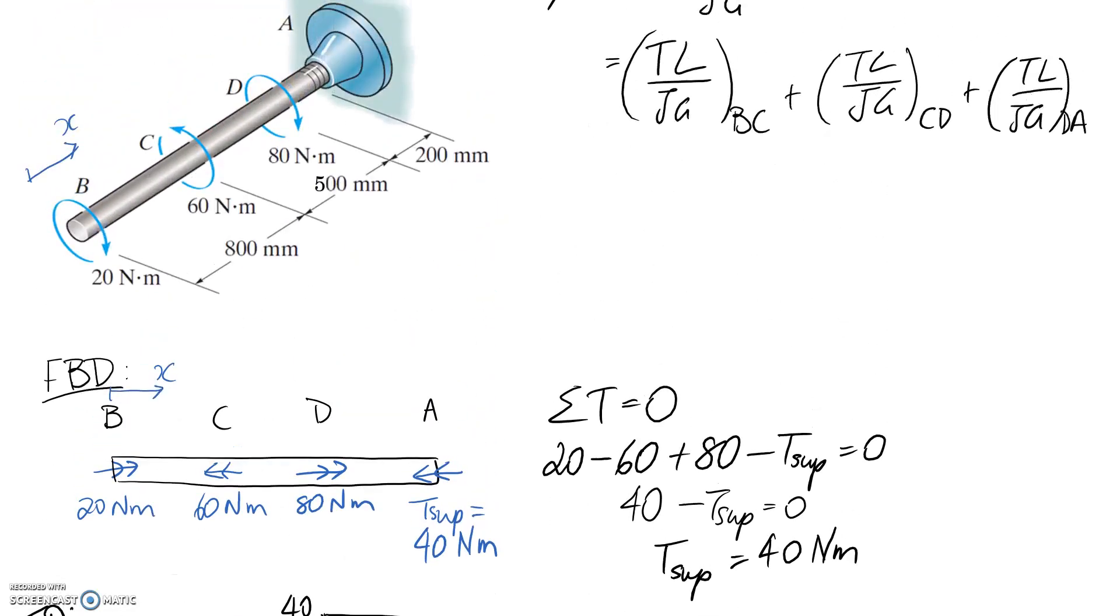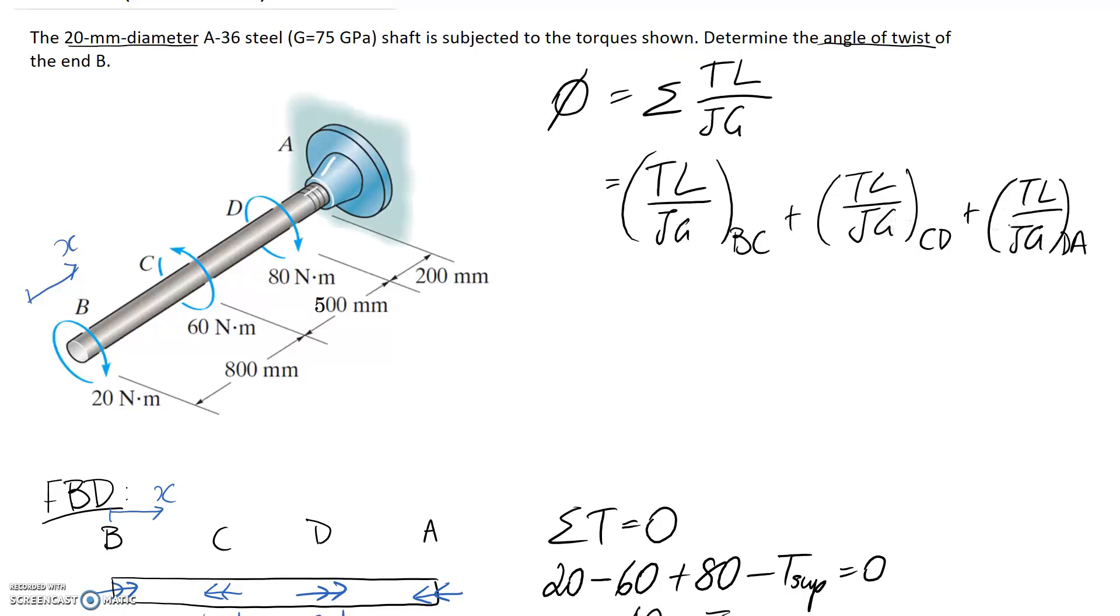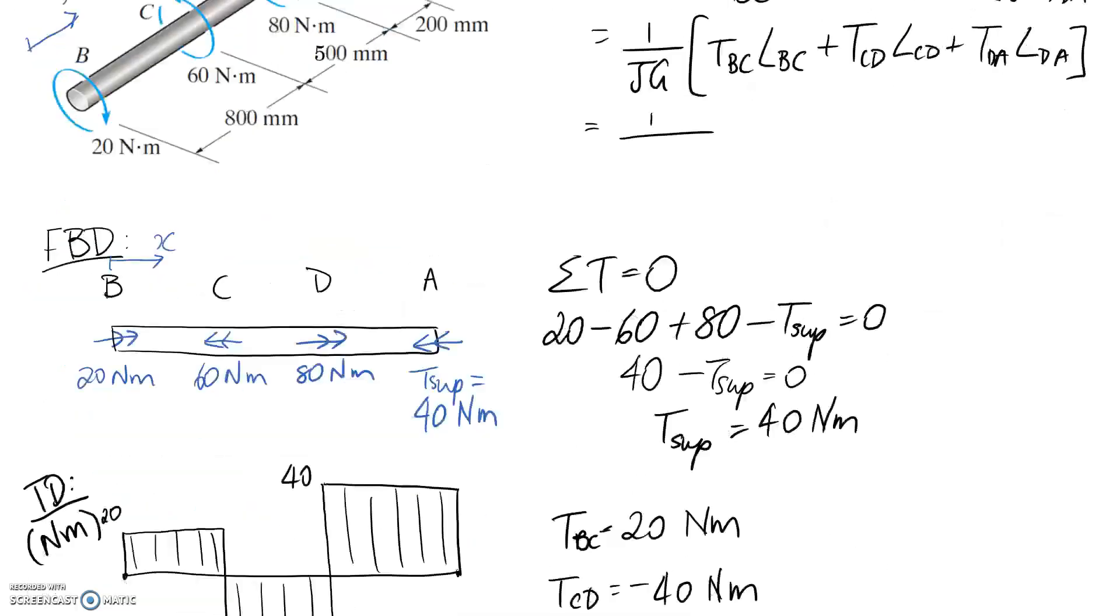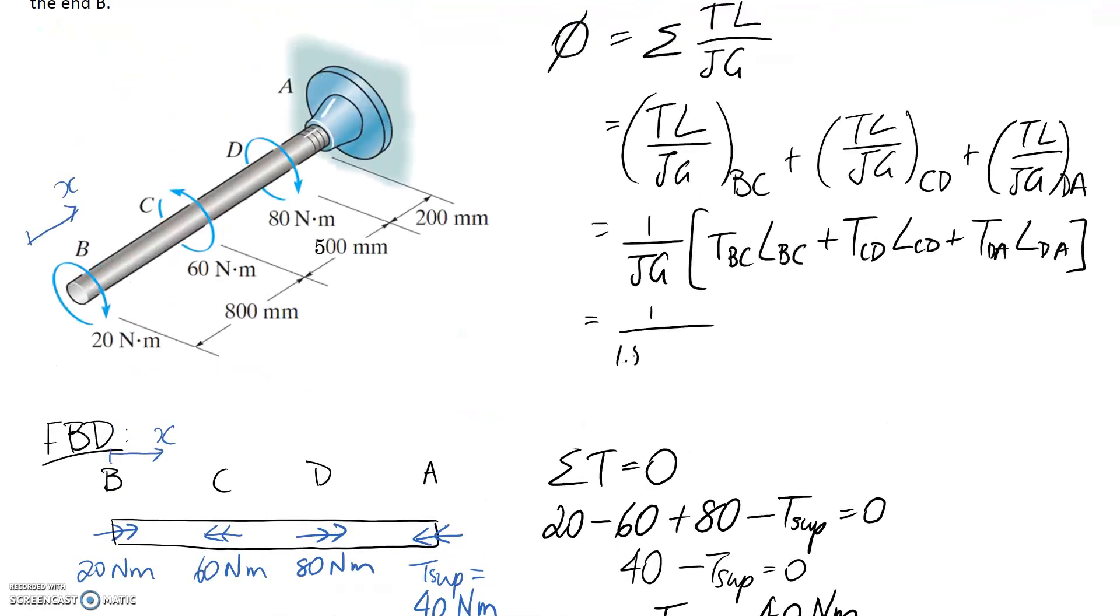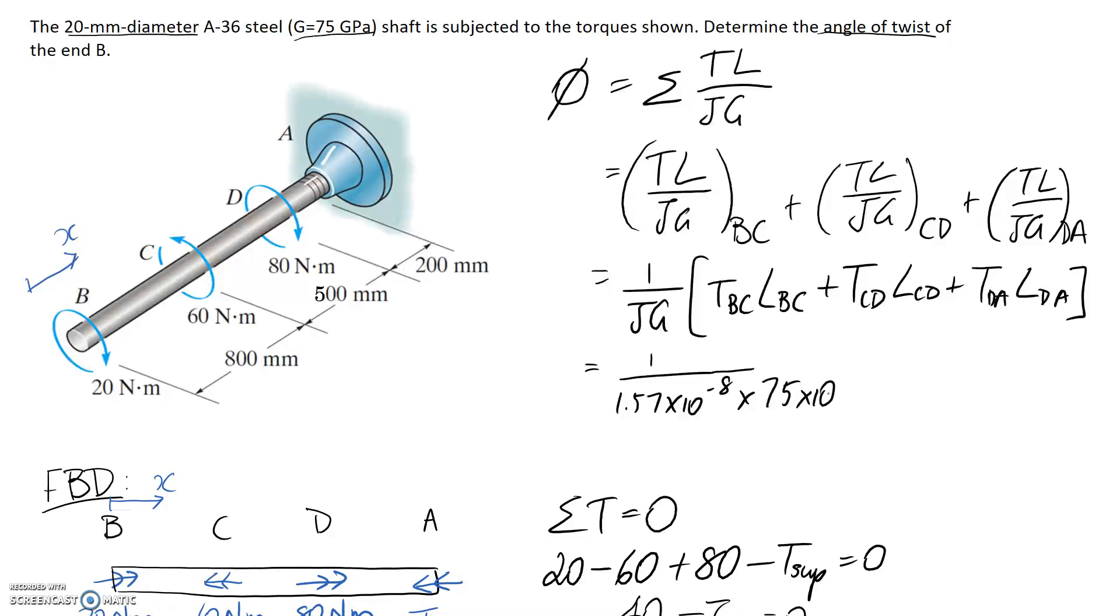The only other thing we've got in this equation is G. G is a material property based on what our shaft is made from. We have A36 steel, and we were given in the question that the shear modulus for the material is 75. Since the shaft is all made from the same material, this is consistent for each section. What I might do is bring this JG out the front of the bracket, factorizing, and then all we're going to be left with is these top lines.